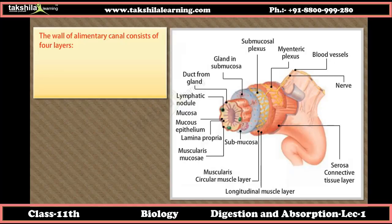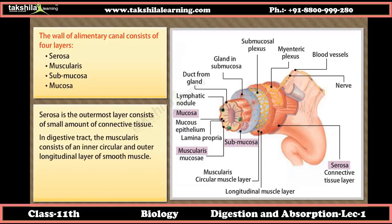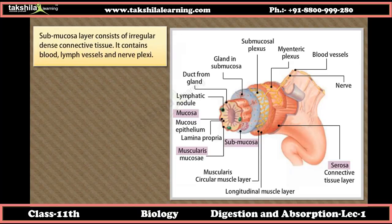The wall of the alimentary canal consists of four layers: serosa, muscularis, submucosa, and mucosa. The serosa is the outermost layer consisting of connective tissue. The muscularis consists of an inner circular and outer longitudinal layer of smooth muscle — the inner circular layer is arranged in a tight spiral, and the outer longitudinal layer in a loose spiral. The submucosa consists of irregular dense connective tissue containing blood vessels, lymph vessels, and nerve plexi.